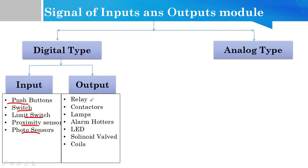What does it look like in the output section? Relay, contactor, lamp, hooters, solid state valve, coils. Digital devices you can use. It means it is a discrete type that works with 0 and 1.